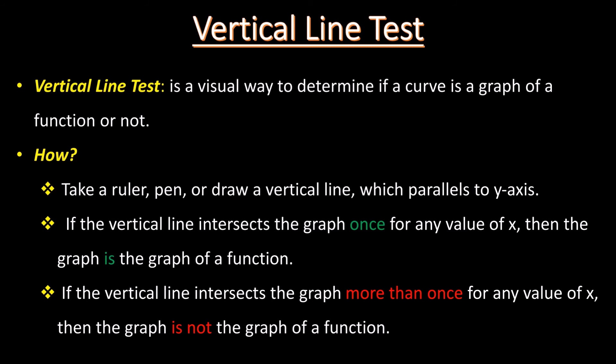Vertical line test is another important concept in today's lesson. It is a visual way to determine if a curve is a graph of a function or not. Take a ruler, pen, or draw a vertical line parallel to the y-axis. If the vertical line intersects the graph once for any value of x, then the graph is a function. If the vertical line intersects the graph more than once for any value of x, then the graph is not a function. The key: intersects once is a function; intersects more than once is not a function.